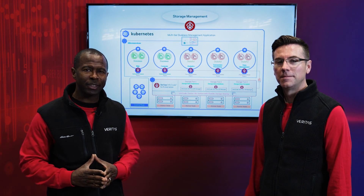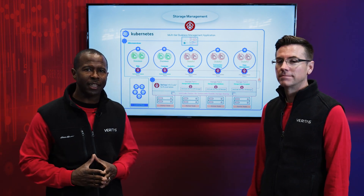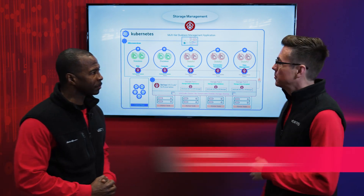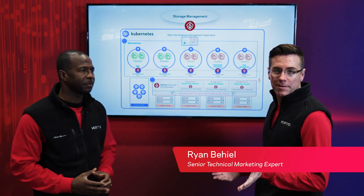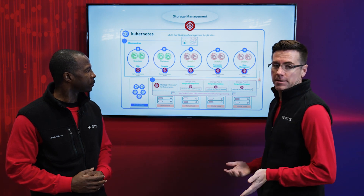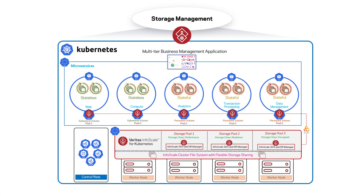I am curious about this flashy diagram — what's actually going on here? Can you explain it to me? So Veritas provides resiliency and protection for Kubernetes, and a big part of that is that we're actually a storage provider for Kubernetes as well. That's what you see here: the Veritas InfoScale solution providing both persistent and ephemeral storage for stateless and stateful applications running in a Kubernetes cluster.